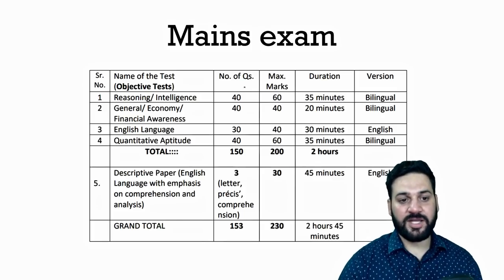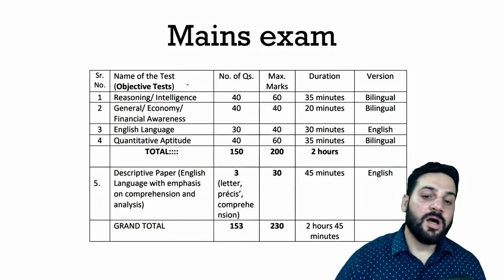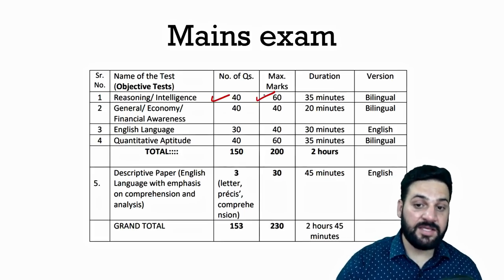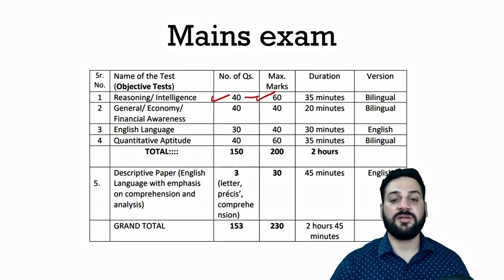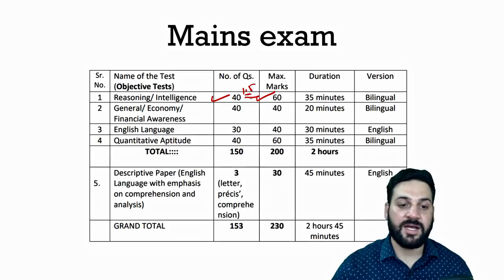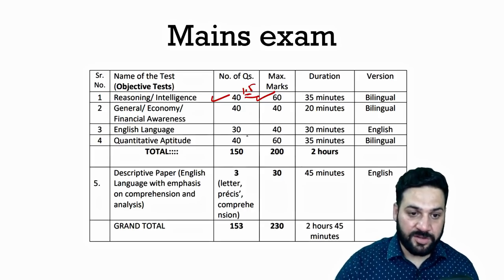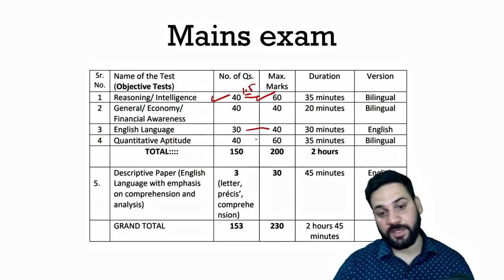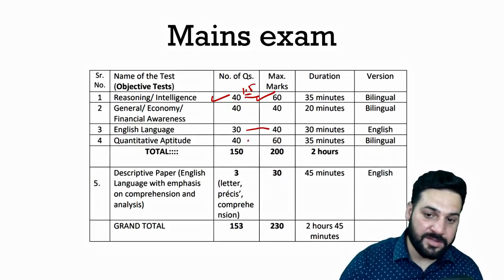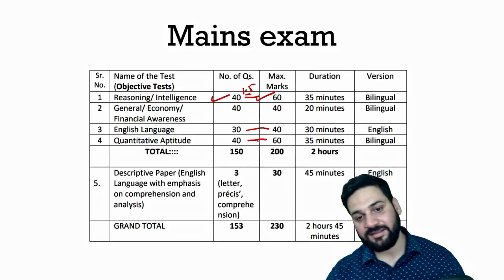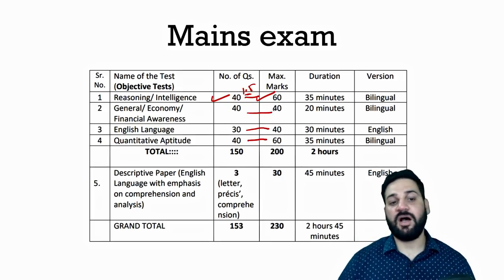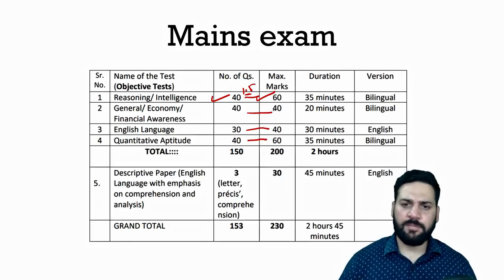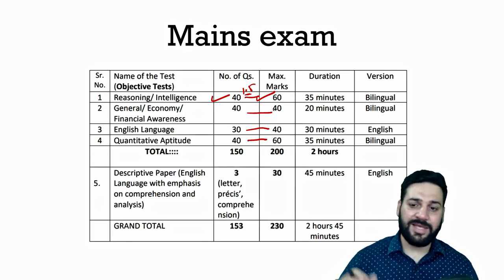In the Mains exam, General Intelligence has 40 questions for 60 marks — one question equals 1.5 marks. English has 30 questions for 40 marks. Quantitative Aptitude has 40 questions for 60 marks. General Awareness and Financial Awareness carry one mark each per question.